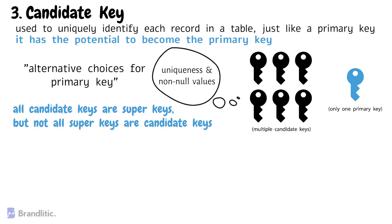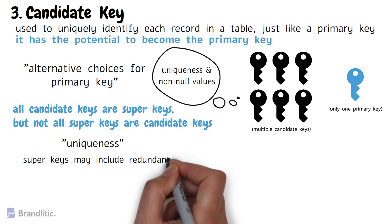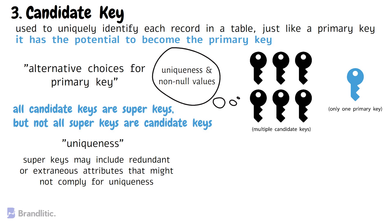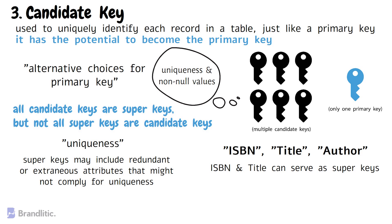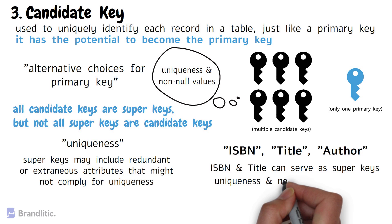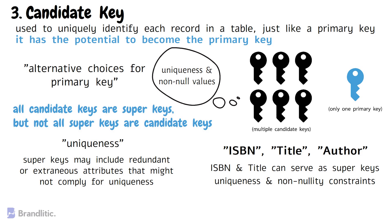Do note that all candidate keys are super keys, but not all super keys are candidate keys. All candidate keys are super keys because they satisfy the uniqueness requirement. However, not all super keys are candidate keys because they may include redundant or extraneous attributes. For example, consider a books table with columns like ISBN, title, and author. Both ISBN and title can individually identify each book uniquely and therefore can serve as super keys. However, they are also candidate keys since they satisfy the uniqueness and non-nullity constraints. By selecting ISBN as the primary key, we establish a unique identifier for each record, while title remains a super key that can also uniquely identify each book.